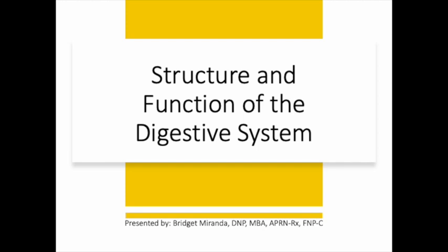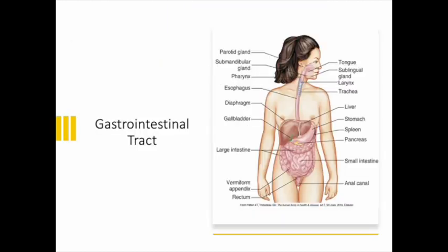Today we're going to be talking about the structure and function of the digestive system, more commonly referred to as anatomy and physiology of the GI tract. This GI tract, or gastrointestinal tract, is sometimes also called the alimentary canal. It's a single hollow tube that connects our mouth, esophagus, and stomach to the small intestines, large intestines, rectum, and finally the anus, and it carries out the digestive processes from eating to defecation.